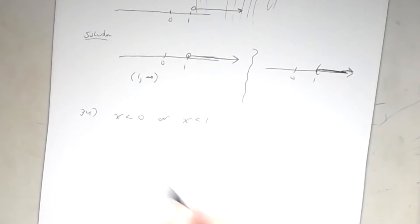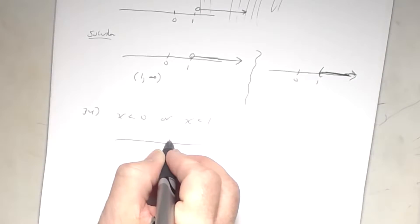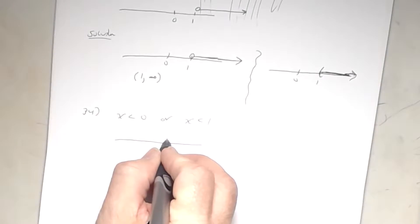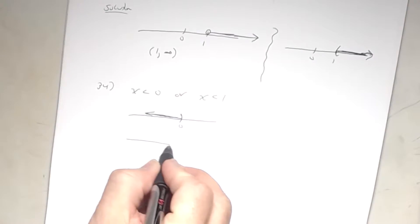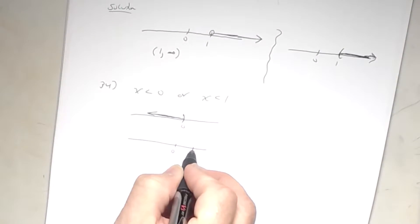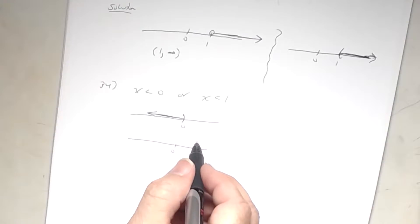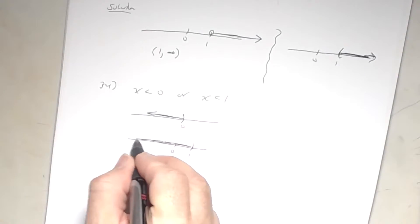Graph each one individually. For x < 0: open circle at zero, parenthesis going to the left. For x < 1: place one to the right of zero, open circle (parenthesis) going to the left.